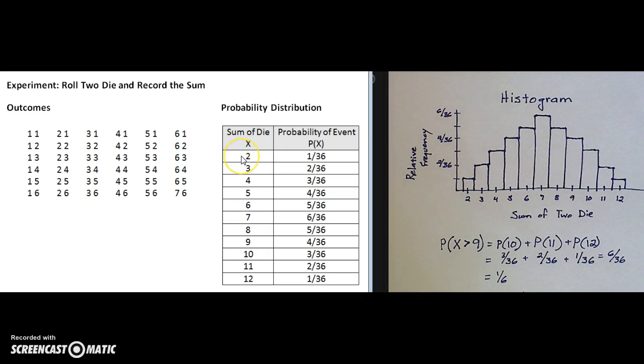In the table to the right we have the sum of dice in the first column and x is the outcome. The outcome of rolling a sum of 2 has a probability of 1 out of 36. It's 1 out of 36 because there are 36 different ways to roll two dice.